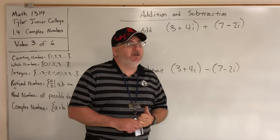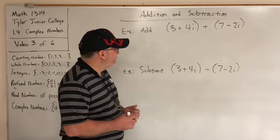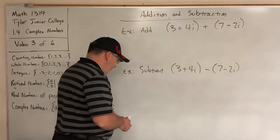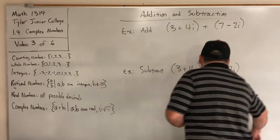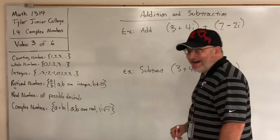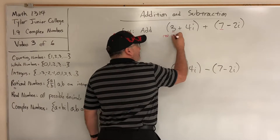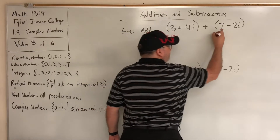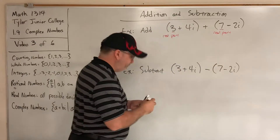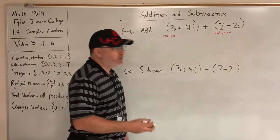To add complex numbers, you simply combine like terms. The parts of the complex numbers that do not have i on them are called the real parts. So the real part of the first complex number is 3 and the real part of the second is 7, and 3 plus 7 is 10.